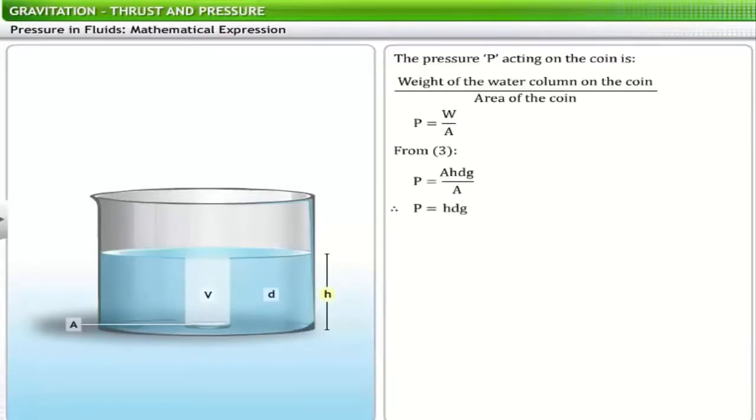Where H is equal to height of the water column, D is equal to density of the water, and G is equal to acceleration due to gravity. Using this expression, you can calculate the pressure applied by a fluid in the walls as well as the base of a container. The pressure at a point in a fluid is equal in magnitude in all the directions.